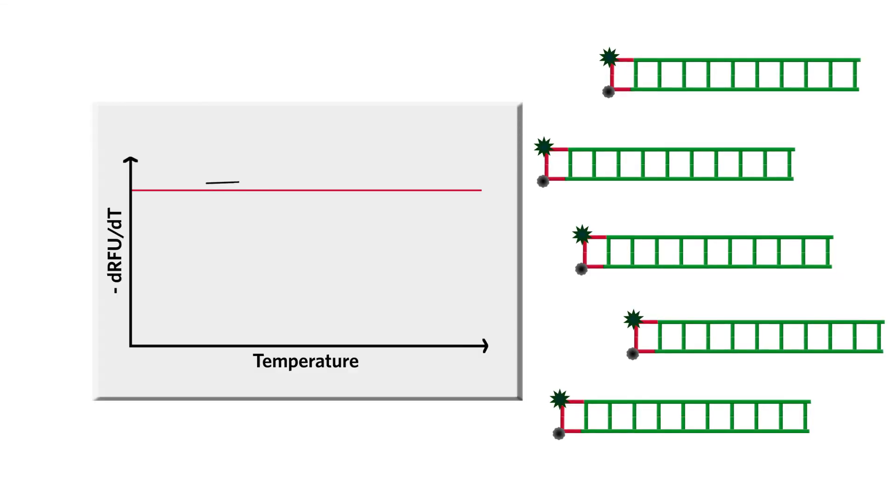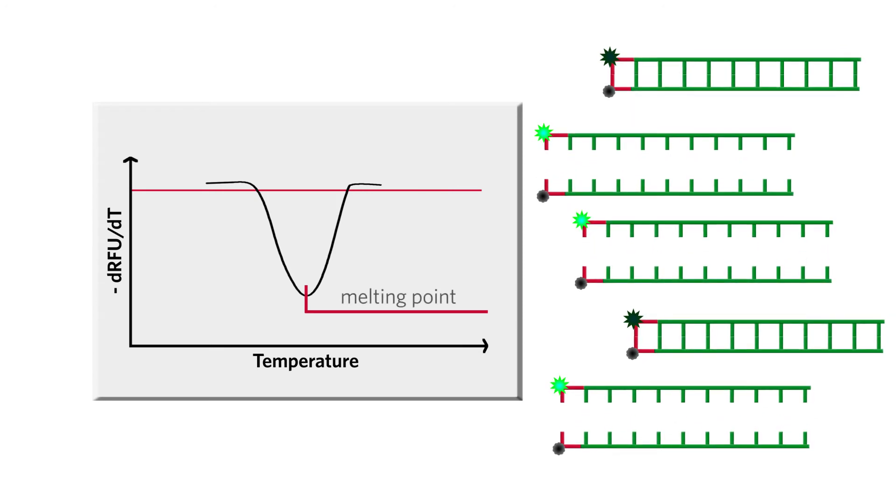The melt curve is graphed to confirm the specific target is present as well as checking for contamination. The point when 50% of the strands are separated is the melting point.